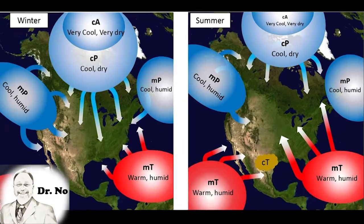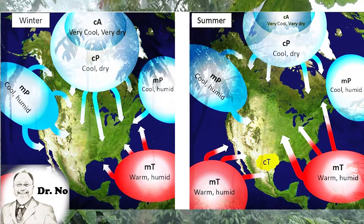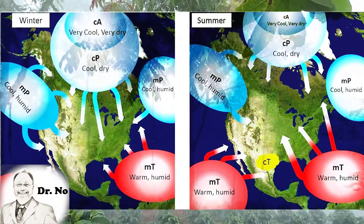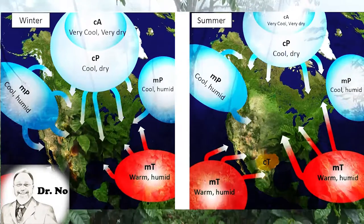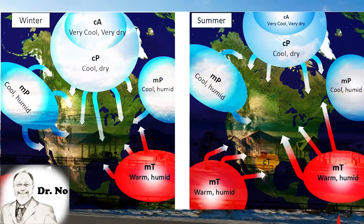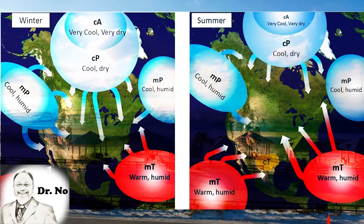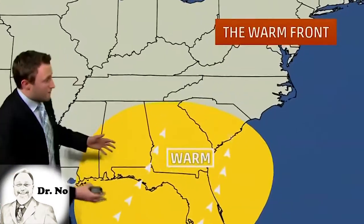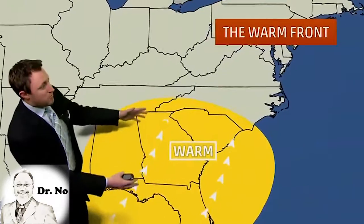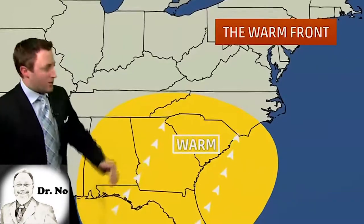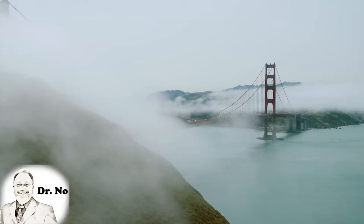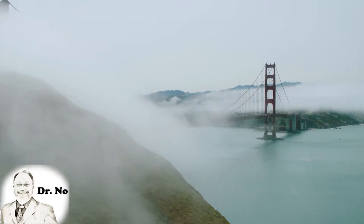Maritime tropical air masses are warm and very humid. Those affecting the U.S. originate over the Gulf of Mexico, the Caribbean Sea, the Western Atlantic, and the subtropical Pacific. Maritime tropical air is unstable, which is why it is commonly associated with cumulus development and thunderstorm and shower activity. In winter, it can lead to advection fog, which develops as the warm, humid air chills and condenses as it moves over the cold land surface.